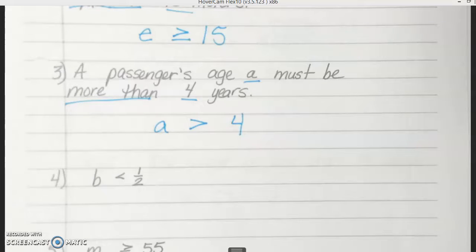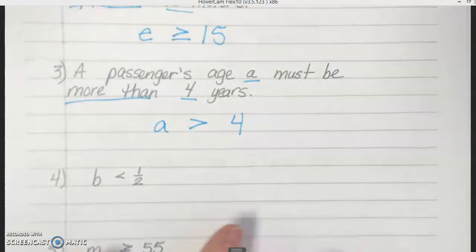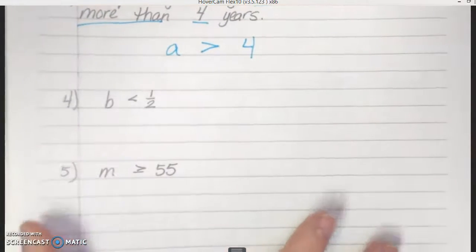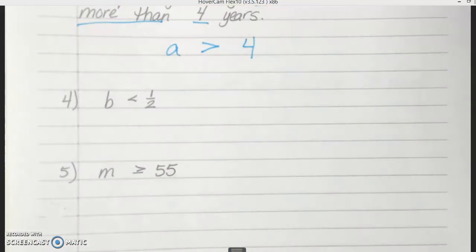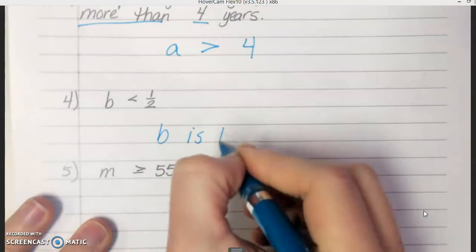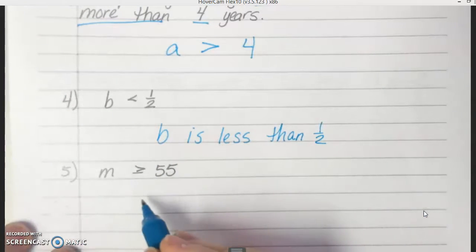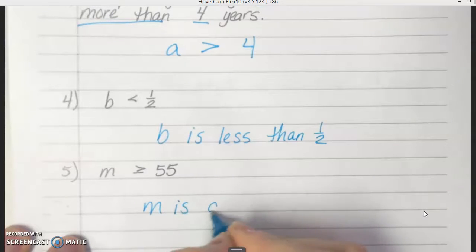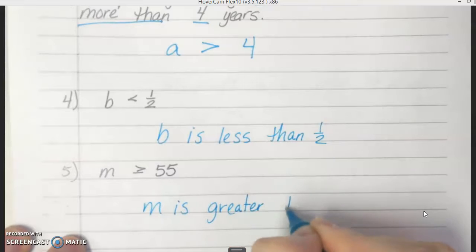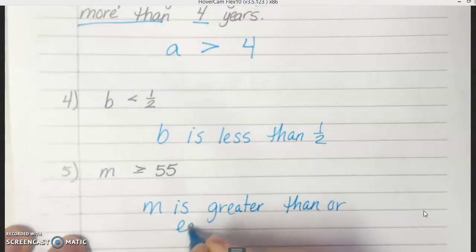Okay, moving on to number 4. So this is where we have to write a word sentence for the inequality. Yeah, let me go ahead and pause it. You can go ahead and do 4 and 5 and then we'll go over it. Okay, so what did you write for number 4? B is less than one half. Okay, so B is less than one half. Alright, what did you write for number 5? M is greater than or equal to 55. M is greater than or equal to 55. Does anybody have a question about how to do this?